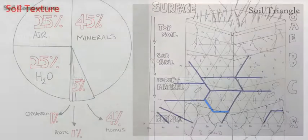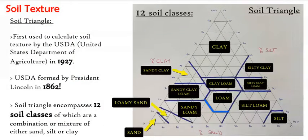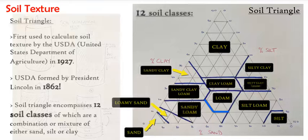This soil triangle was first established and used by the USDA in America in 1927. The USDA was actually formed by Abraham Lincoln in 1862, which is kind of a fun fact. This soil triangle can be used to calculate the texture of the soil, one of the 12 soil classes.